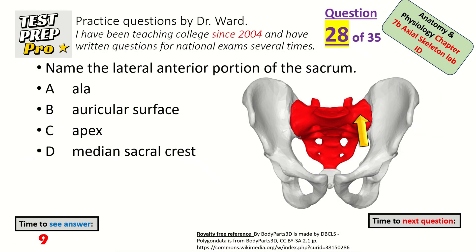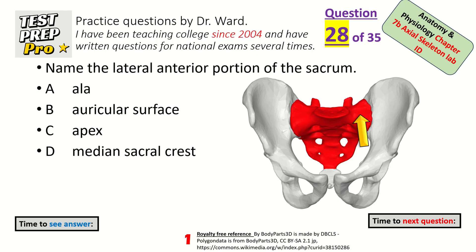Name the lateral anterior portion of the sacrum — it's at the top, the lateral parts of the top of it at the very front. The ala, which means wings.